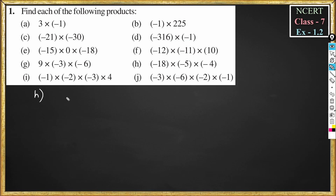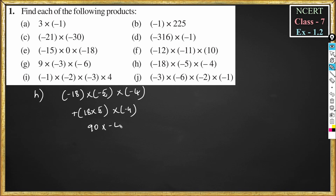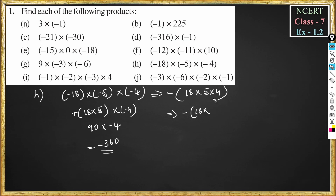Part h: minus 18 into minus 5 into minus 4. Minus into minus is plus, so 18 into 5 is 90, then 90 into minus 4: plus into minus is minus, so 4 into 90 is 360. The answer is minus 360. Alternatively, minus into minus is plus, and plus into minus is minus, so this becomes minus of 18 into 5 into 4, which is minus 360.